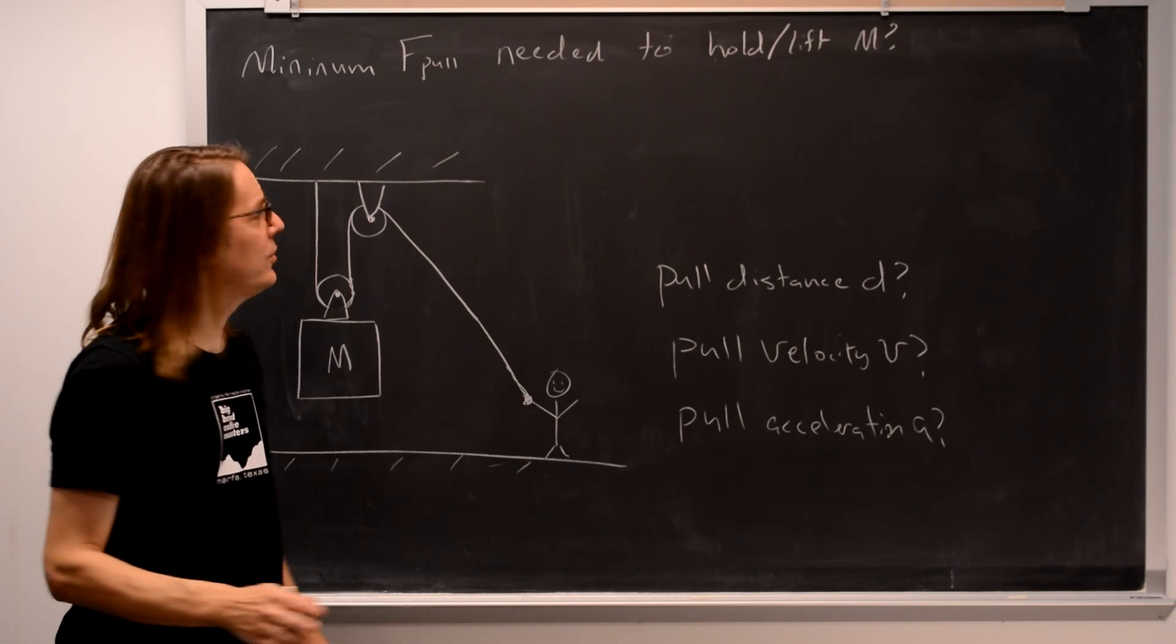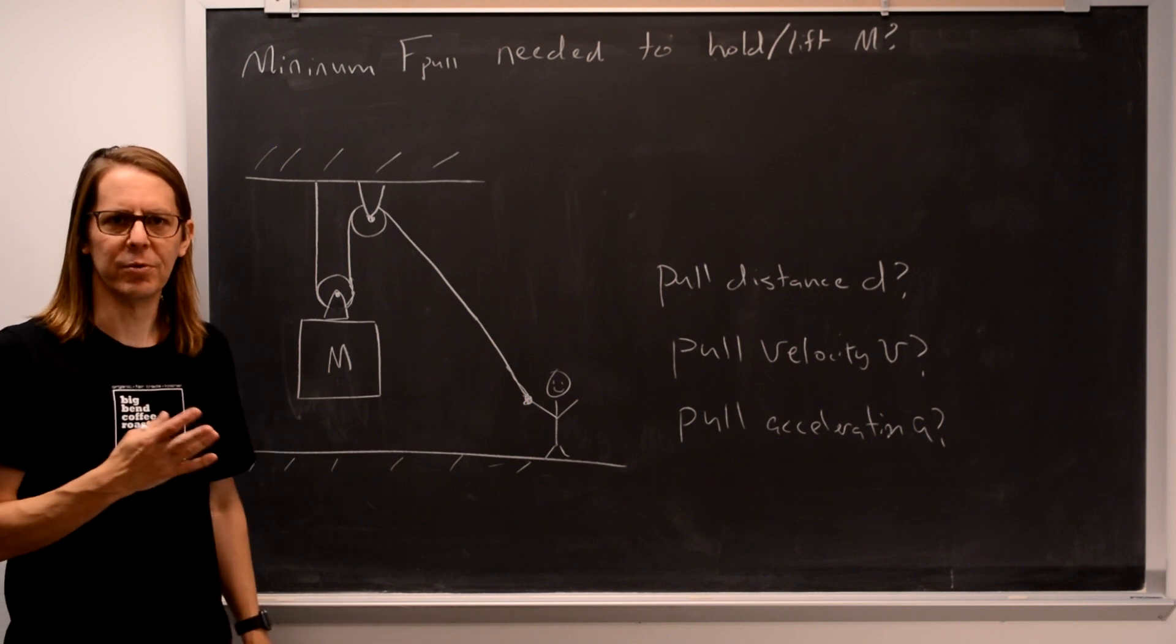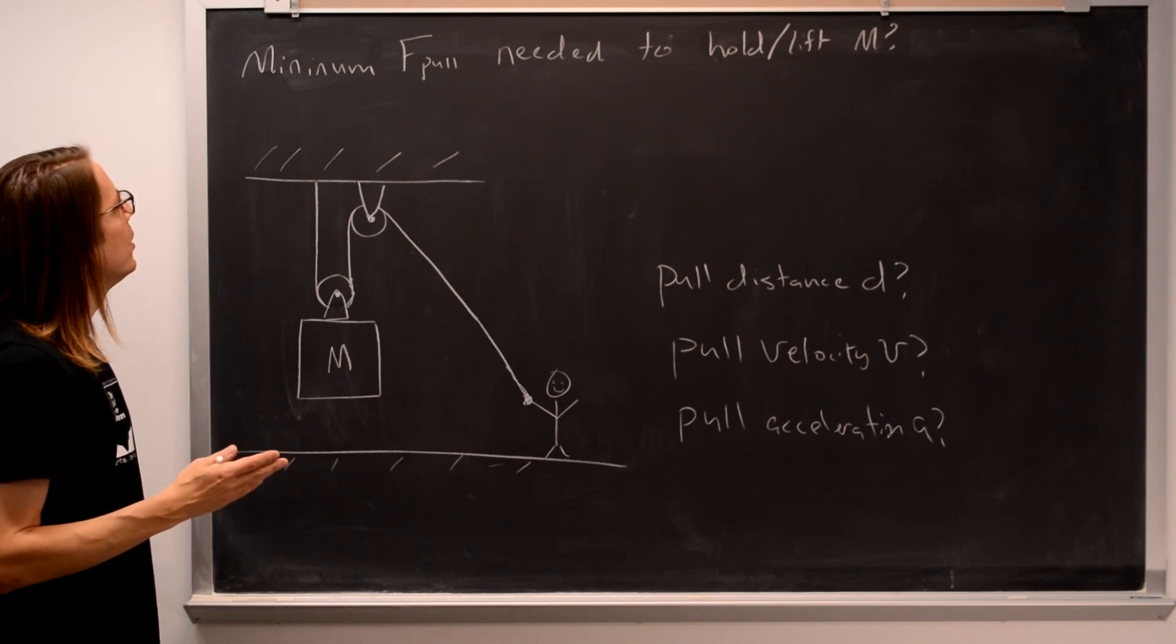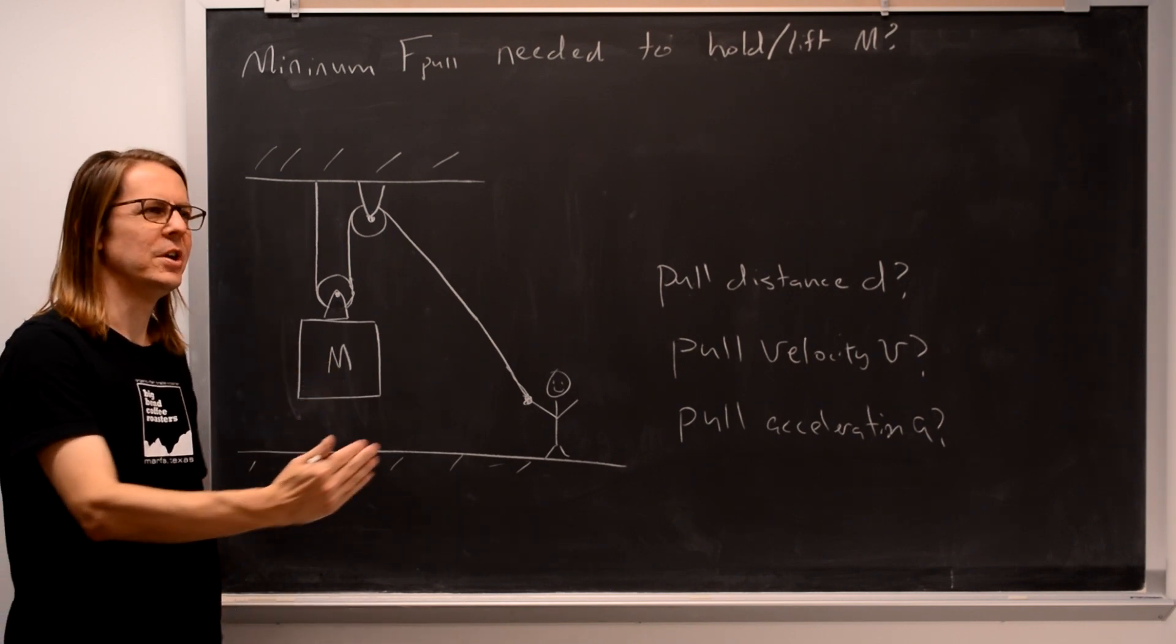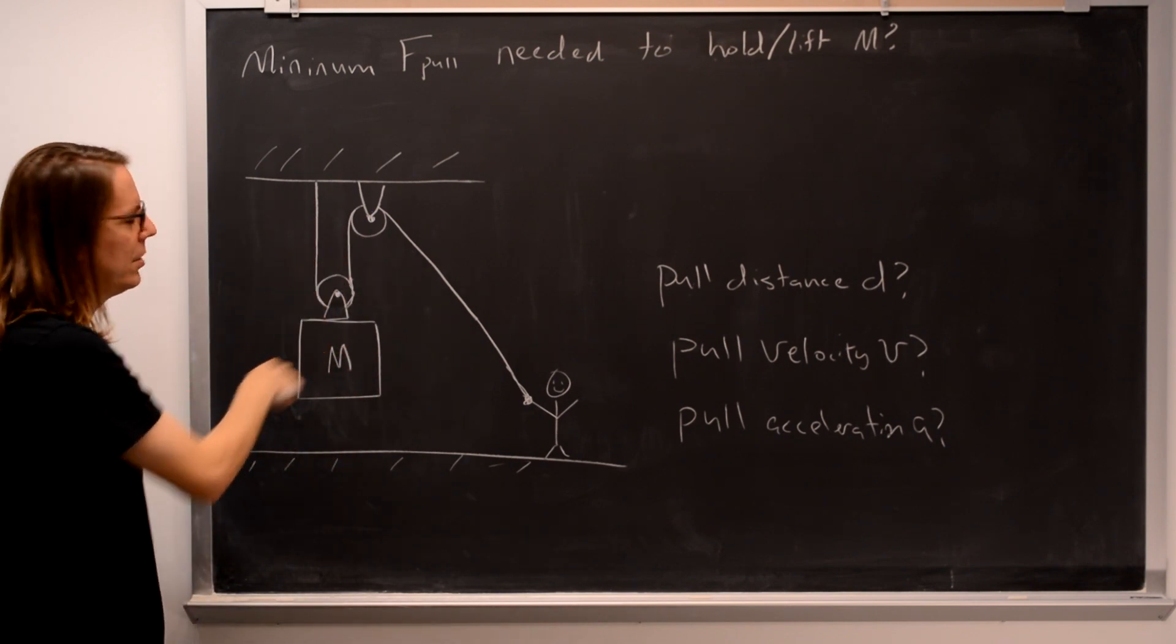You're going to see problems where the pulley systems get more complicated. So let's look at this basic use of a pulley. I've told you one thing you can do with it is use it to change the direction of a tension force. But it also gets interesting when you double up a pulley on an object.